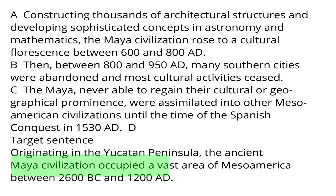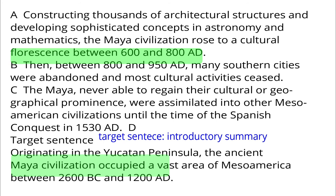The target sentence provides an introductory summary of Mayan civilization. A says the Maya civilization rose to a cultural fluorescence between 600 and 800 AD. B talks about what happened after A, and C talks about what happened after B. Since A, B, and C are cohesive, the target sentence should be before A. Answer A.